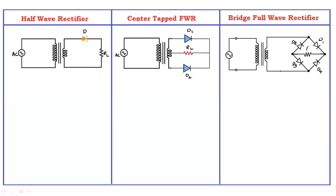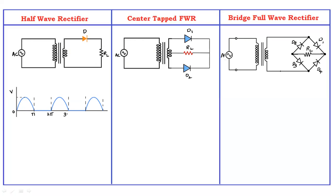Looking at the waveforms: in the half wave rectifier, only the positive half cycle is passed to the output. From 0 to π it is conducting; from π to 2π there is no conduction. This pattern repeats — conduction only during positive half cycles, no conduction during negative half cycles. That is why it is called a half wave rectifier.